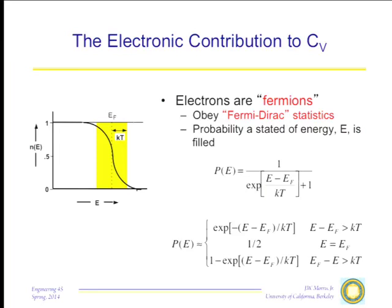The probability that an electron is in a state of energy E is given by Fermi-Dirac statistics. When E is well below the Fermi energy, or T is zero, P = 1. When E is well above the Fermi energy, you get exp(−ΔE/kT) where ΔE is the energy difference from the Fermi energy. Precisely at the Fermi energy, the probability of occupation is one half. In a semiconductor the Fermi level sits right in the middle of the band gap between the conduction and valence bands.